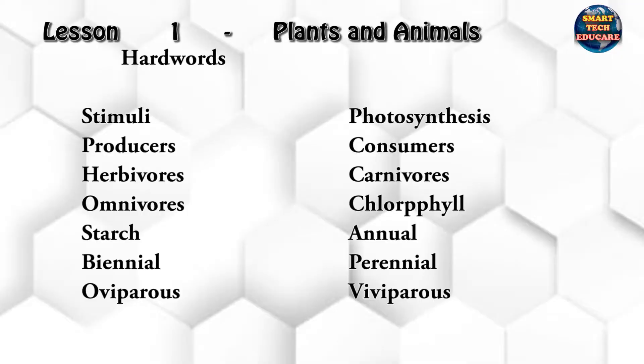Lesson 1: Plants and Animals. Hard words: stimuli, photosynthesis, producers, consumers, herbivores, carnivores, omnivores, chlorophyll, stoma, annual, biennial, perennial, oviparous.